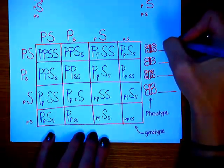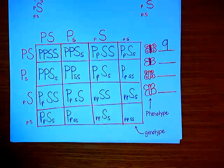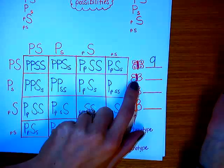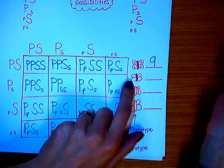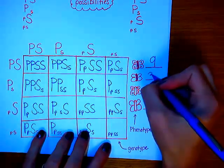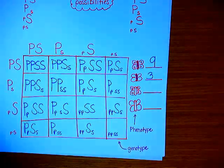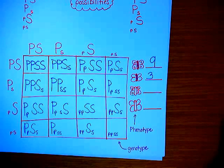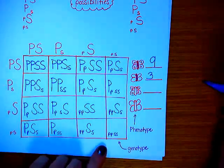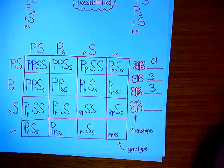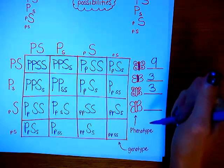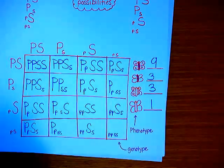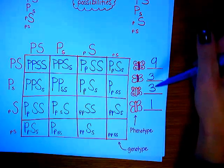If you go through and count, you would find 9 butterflies that would have a pink body with spots. Then we can find out how many would have a pink body with no spots — that would be 3. Next, white body with no spots, which are both recessive traits requiring little p, little p, little s, little s — we would have 3 of those. And lastly, white body with spots — we would have 1 of those. So our phenotypic ratio would be 9 to 3 to 3 to 1.